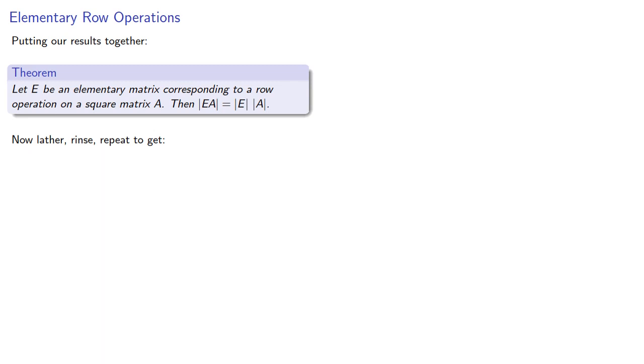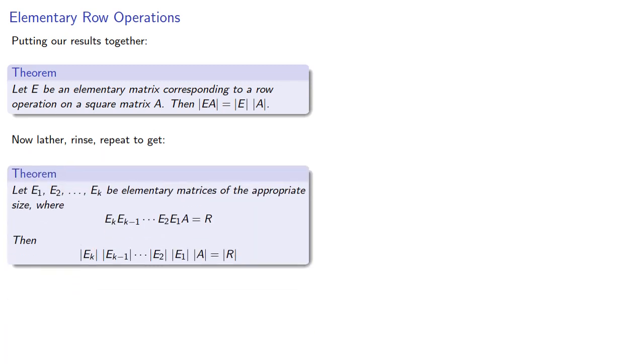Now lather, rinse, repeat to get the following. Let E1, E2, and so on be elementary matrices of the appropriate size, where the product with A is equal to R. Then the product of the determinants is equal to the determinant of R. And this is an important result, and we'll see where it takes us next.